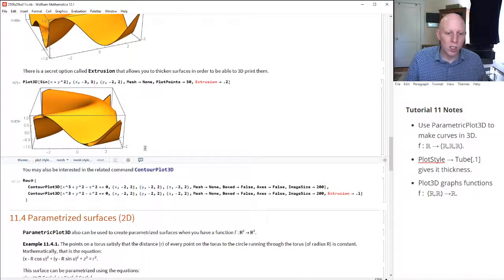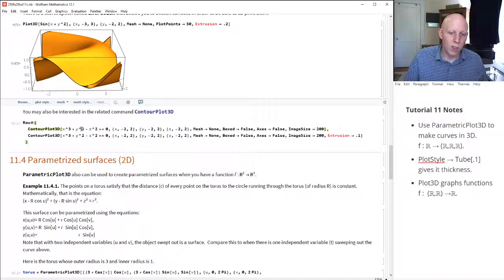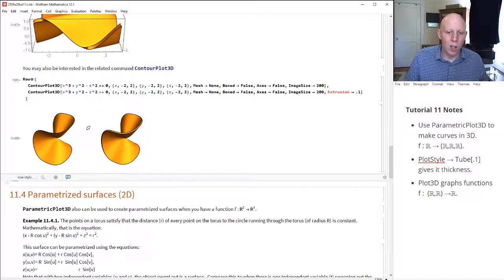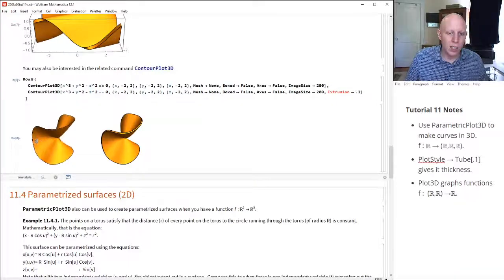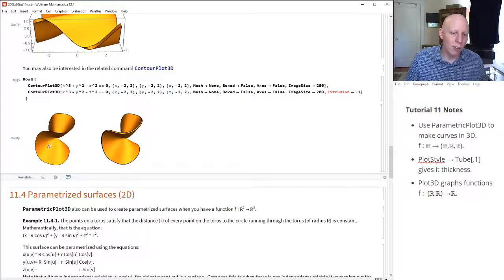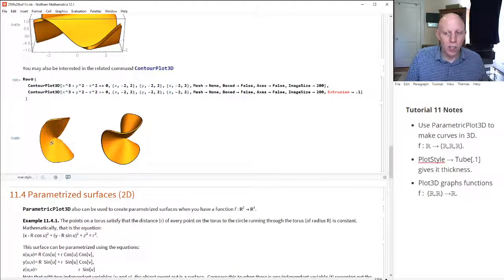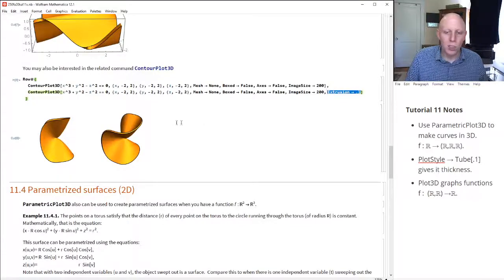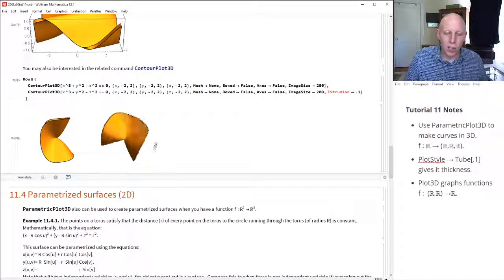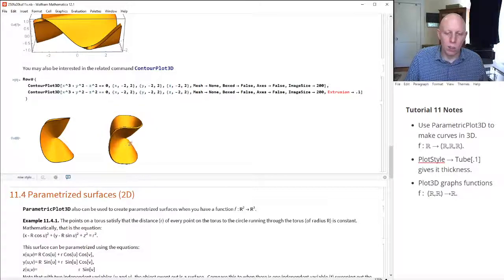A related concept is the idea of the contour plot. A contour plot is giving us a set of points that satisfy an equation. And so in this instance, x is not a function of y and z, it's only implicitly a function of y and z. And so this same option can be used to thicken up the surface.